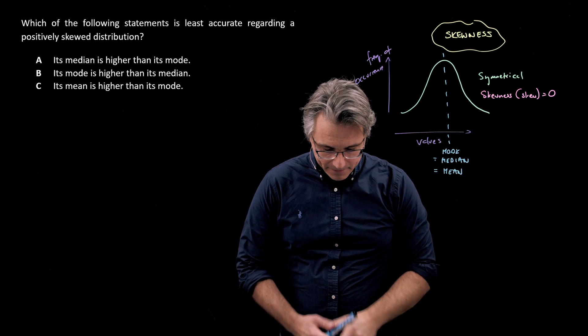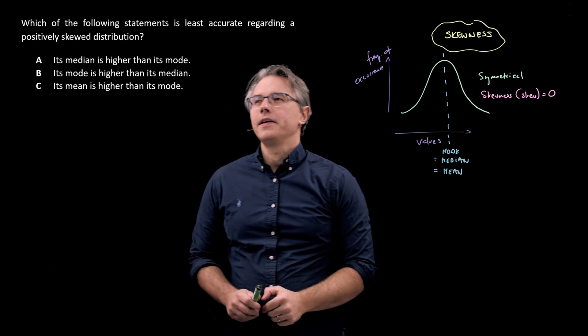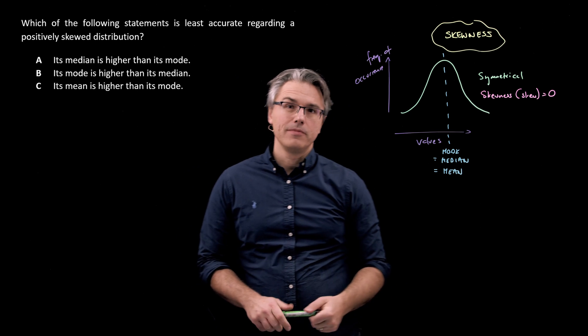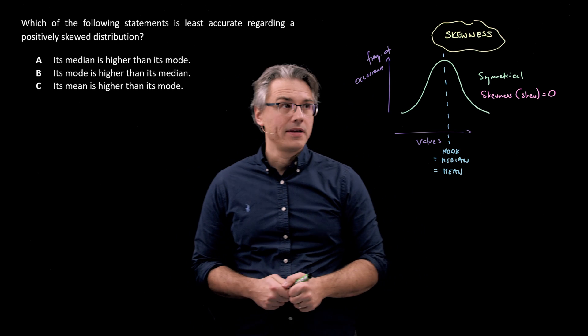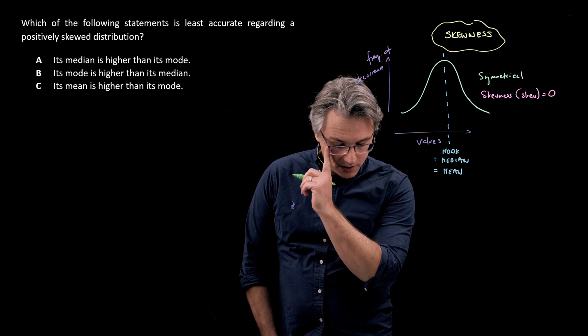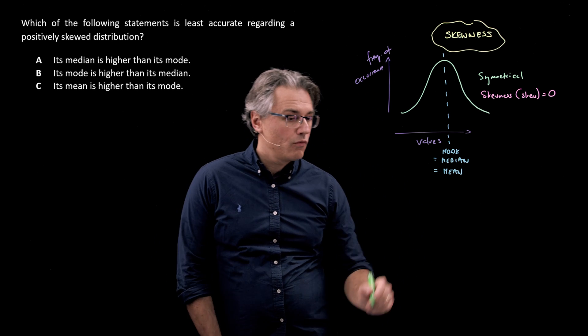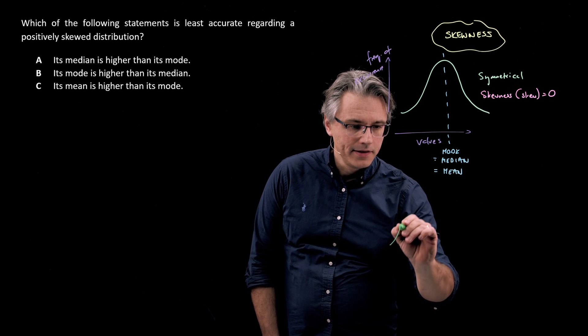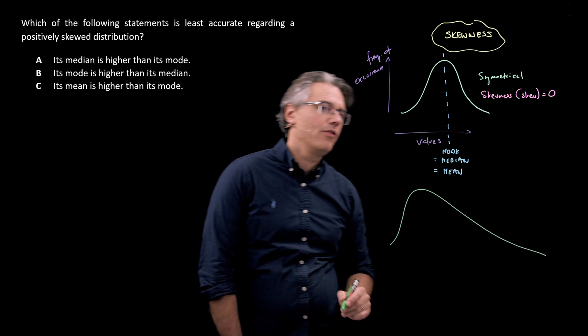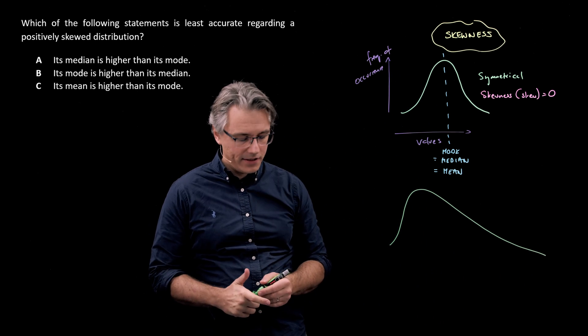Now how about a positively skewed distribution? Because that's what the question is actually asking us about. Well, a positively skewed distribution will look like this - it will have a long tail on the right hand side here.